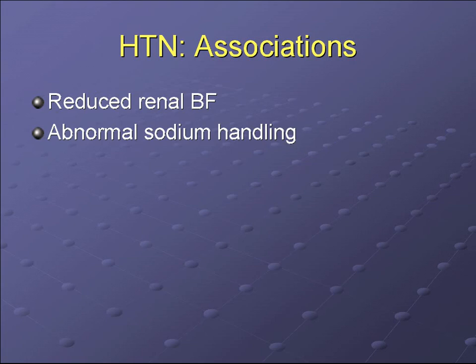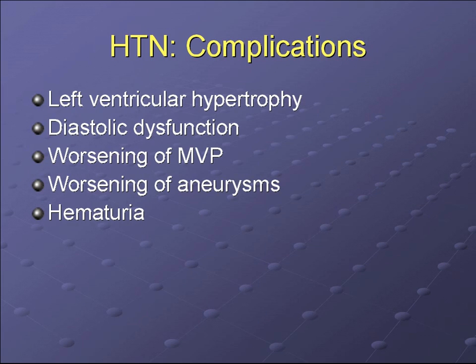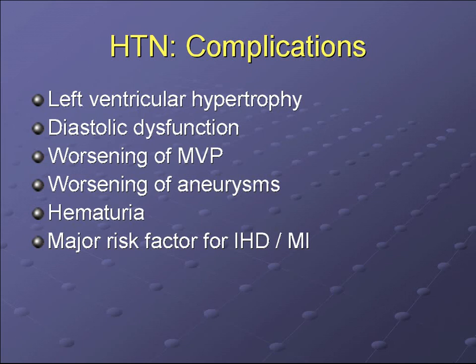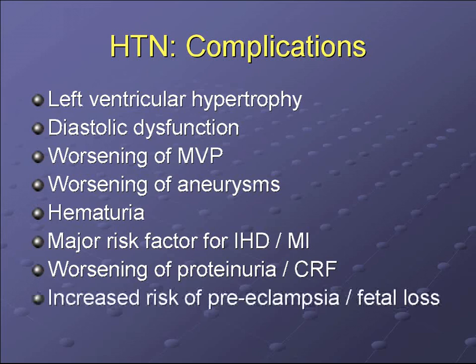Associations with hypertension include reduced renal blood flow, abnormal sodium handling, and remodeling of renal vasculature. Implications of hypertension are serious: it can cause left ventricular hypertrophy with diastolic dysfunction, worsening of mitral valve prolapse, worsening or rupture of aneurysms resulting in intracerebral or subarachnoid hemorrhage, and it is a major risk factor for ischemic heart disease and MI. It can also worsen proteinuria and chronic renal failure. In women, there is an increased risk of preeclampsia and fetal loss.